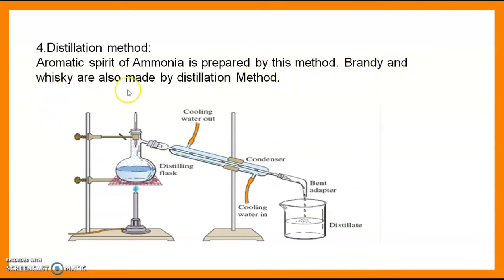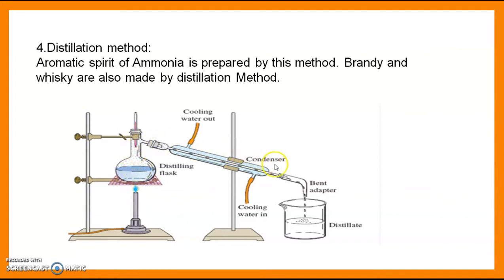The last method is the distillation method. Aromatic Spirit of Ammonia is prepared by this method. Brandy and whiskey are also prepared by distillation. In this assembly, using a round-bottom flask with a condenser, when the solution is heated the vapors evaporate, then condense in the condenser, and are finally collected as the distillate.